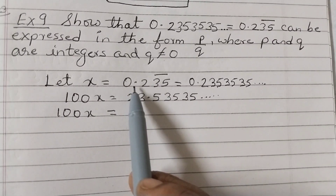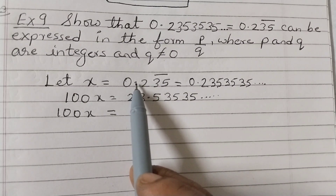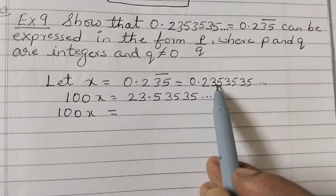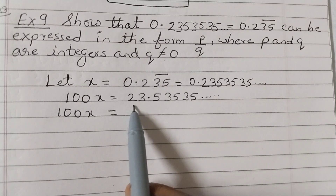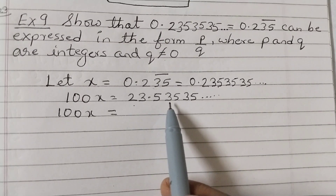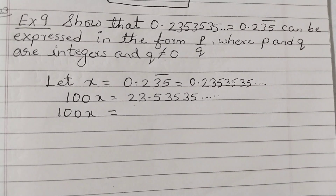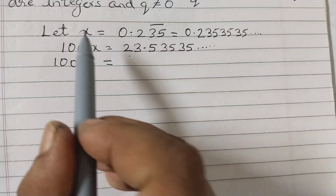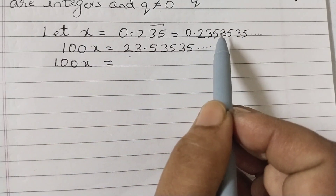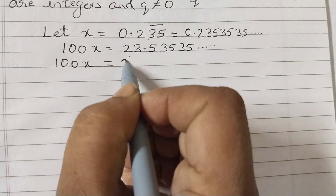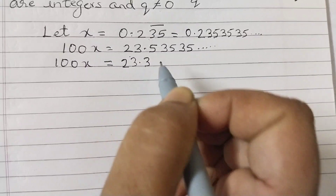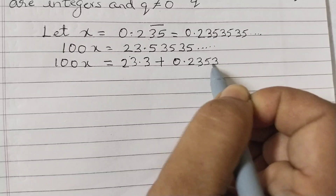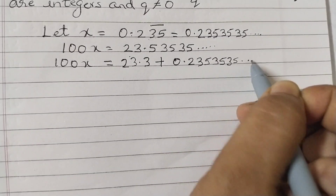When we multiply, the decimal point will shift 2 places to the right — 1 and 2 — so after the 3 you get the decimal point, giving 23.53535... Now we need to split this decimal number in such a way that we get this part plus something, so it can be written as 23.3 plus 0.2353535...